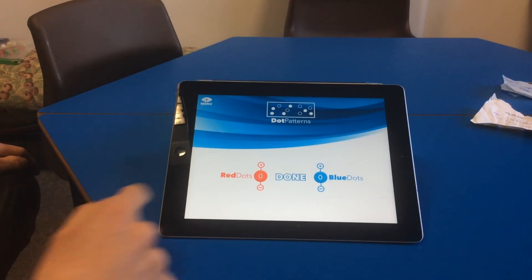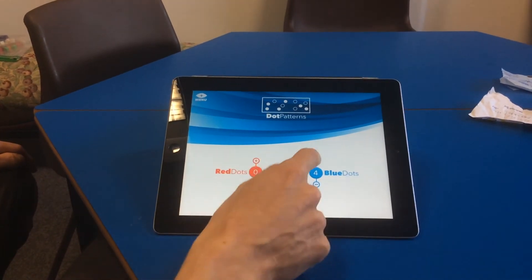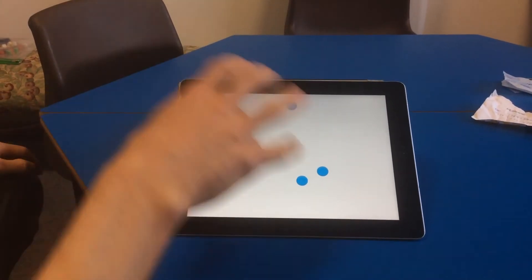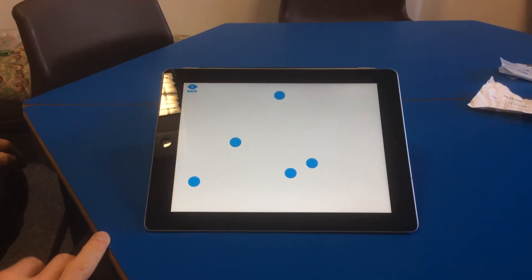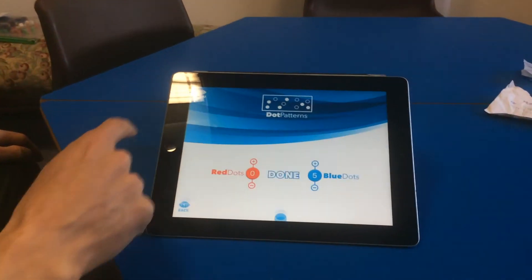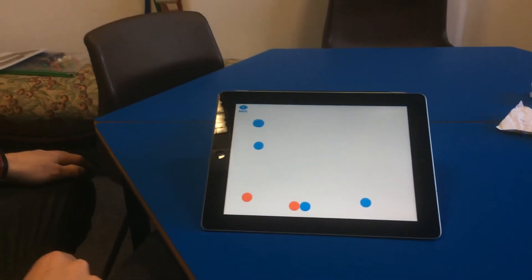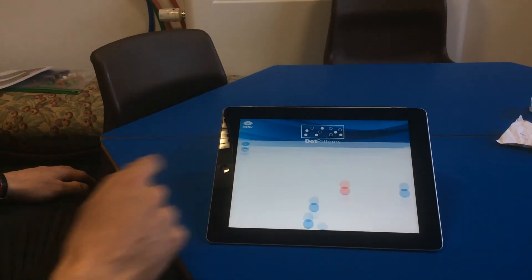The dot pattern section is great for just throwing up dot patterns for subitizing so again children could maybe see that and break down five as two and three. It can do it in two different colours as well. It can just throw up a range of different images. Really useful feature there.